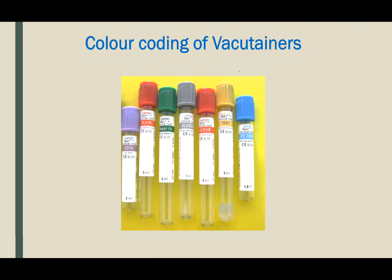Choosing the correct blood collection tube for a particular blood investigation requires some knowledge. In this video I am going to share that knowledge with you. Blood collection tubes are known as vacutainers since they contain vacuum — this vacuum facilitates the flow of blood during phlebotomy.